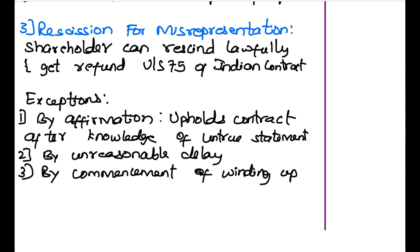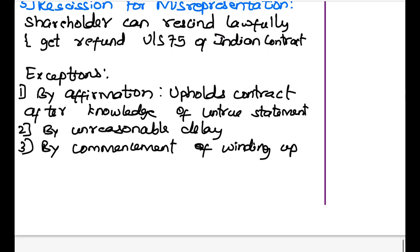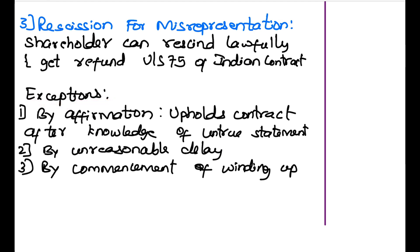Rescission means a shareholder who bought shares can lawfully resign from the contract, get a refund, and is not held liable. The shareholder's money is refunded under section 75 of the Indian Contract Act. However, there are certain exceptions when rescission does not entitle a refund. First, by Affirmation — if the shareholder finds the prospectus statement is fraudulent but continues the contract anyway, he cannot later resign and will not be given any compensation. Second, by Unreasonable Delay — whenever a shareholder discovers an untrue statement, he must immediately resign; if he delays unreasonably, he will not get compensation. Third, by Commencement of Winding Up — if the company is winding up and going bankrupt, shareholders also do not get compensation.